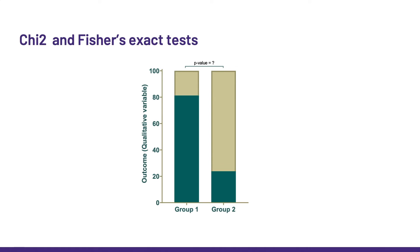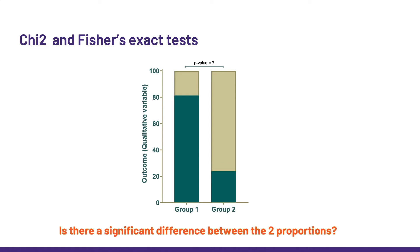In a nutshell, we use a chi-square or Fisher's exact test when we want to know if there is a significant difference between two proportions. The chi-square can actually compare more than two, but we will not talk about it in this video. Now, if we want to do a good job, there are a few questions we need to answer.